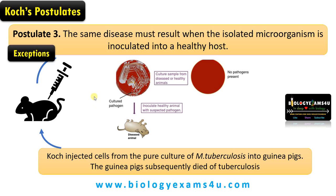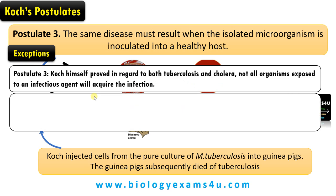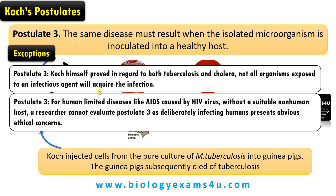There are exceptions to postulate three. Koch himself proved that when tuberculosis and cholera agents were injected into organisms, not all exposed organisms acquired the infection. We now know that depending on the immune response or health of the individual, the injected microorganism may not cause disease in all healthy hosts. Another problem arises with human-limited diseases like AIDS caused by HIV.